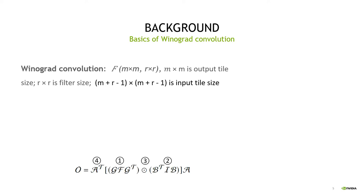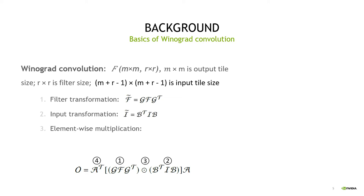The computational formula of 2D Winograd Convolution is as listed here. A, G, and B are transformation matrices. Given M and R, these transformation matrices are not unique. F represents the filter kernel, and I denotes the input tensor. We divide the formula into four sub-formulas: filter transformation, input transformation, elementwise multiplication, and output transformation.